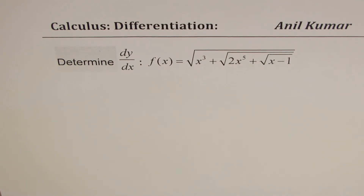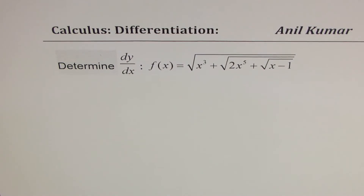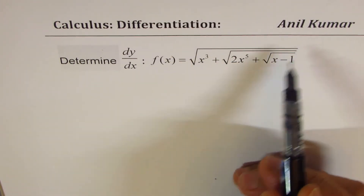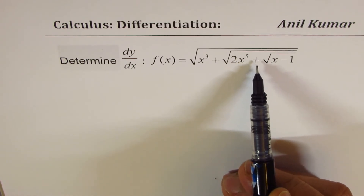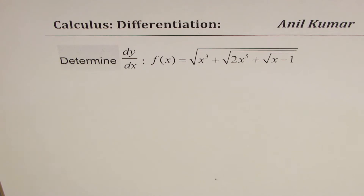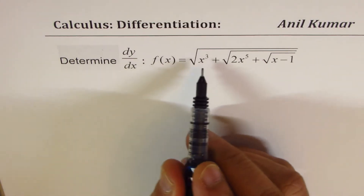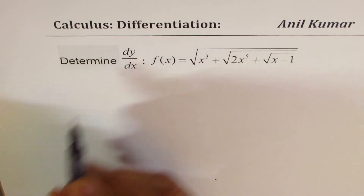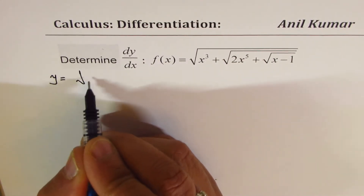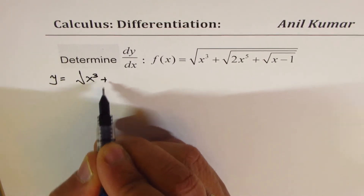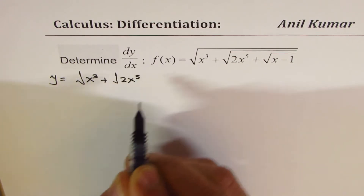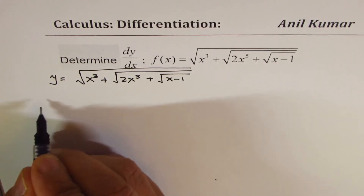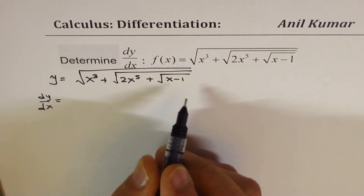You can pause the video, attempt the next question, and then look at my solution. Here is the second example: we need to find the derivative of y = √(x³ + √(2x⁵ + √(x − 1))). We have nested square roots, and we'll apply the chain rule to find this derivative.